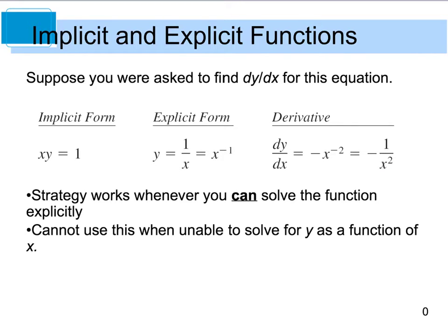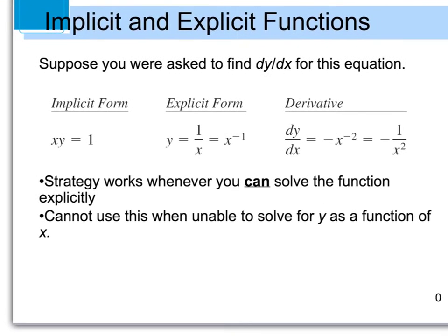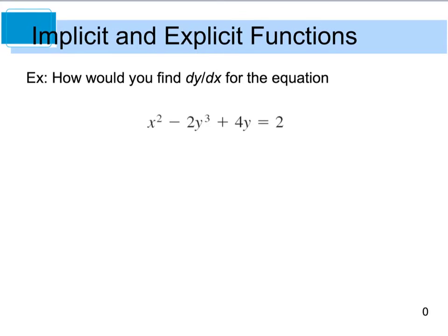However, we are not always able to isolate y like we were able to in this example. If you look at the example of x squared minus 2y cubed plus 4y equals 2, and you try to isolate y initially, you'll see that it's pretty difficult to do. And because we can't isolate y, we can't go ahead and find dy/dx for this equation. We can do this if we use implicit differentiation, which we're going to go over here in just one second.